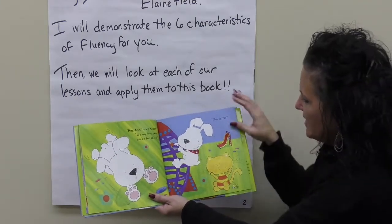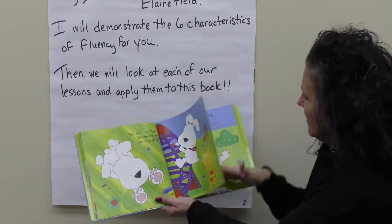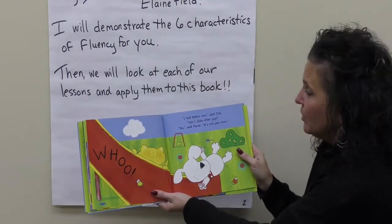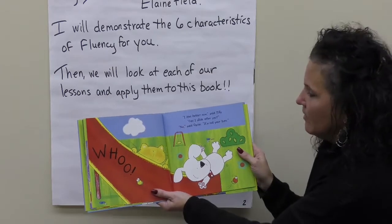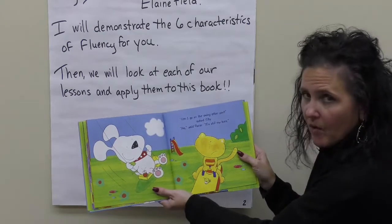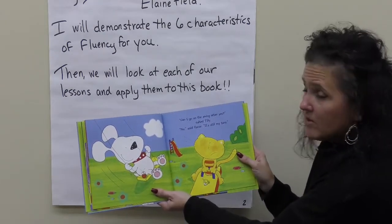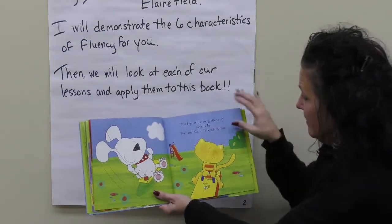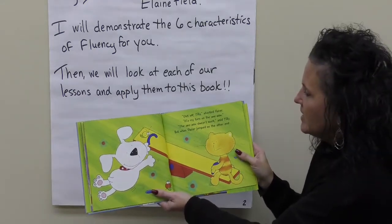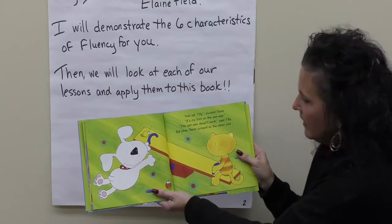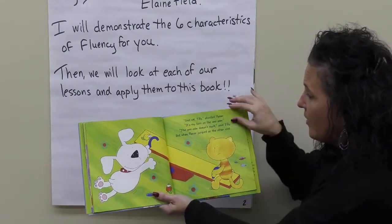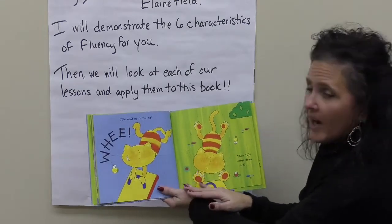This is fun. I feel better now, said Tilly. Can I slide after you? No, said Oscar. It's not your turn. Can I go on the swing after you, asked Tilly. No, said Oscar. It's still my turn. Get off, Tilly, shouted Oscar. It's my turn on the seesaw. The seesaw doesn't work, said Tilly. But when Oscar jumped on the other end, Tilly went up in the air.